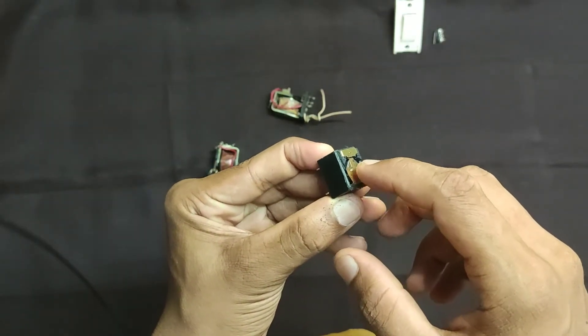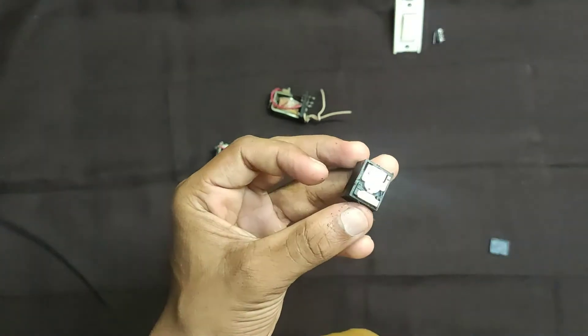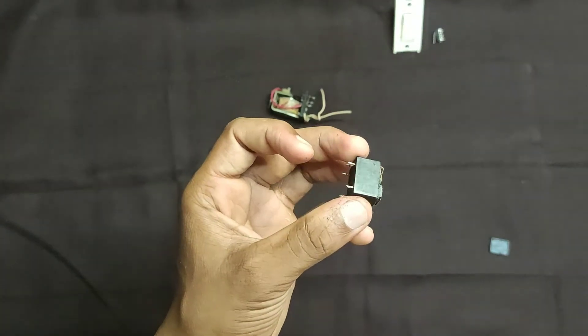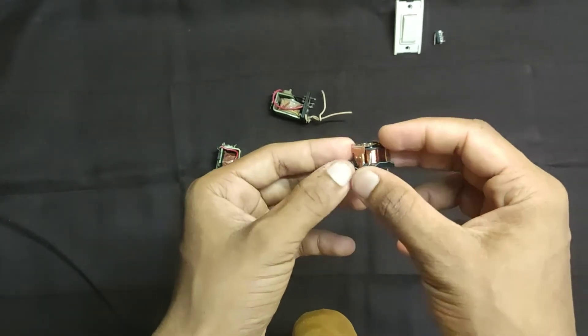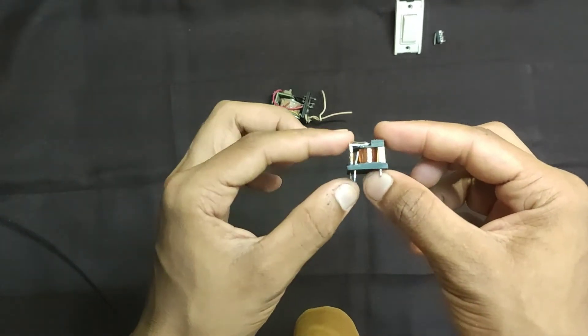Here you can see, the construction of this relay is little bit different from that relay, but the working principle is same for every relay. The coil, now you can see clearly, the coil too.